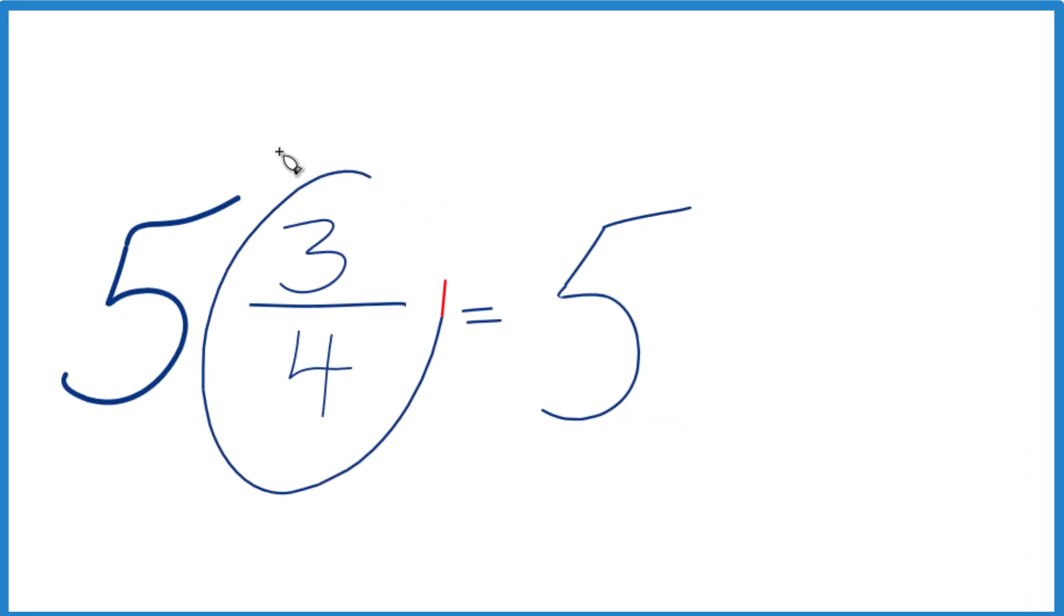What we need to do now is get 3 fourths to a decimal. You might know that 3 fourths is 0.75, and if you know that, you're done, because the fraction 5 and 3 fourths is 5.75. If you didn't know that,